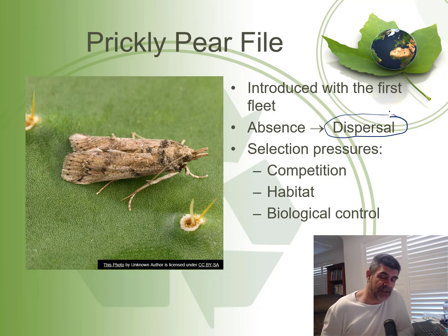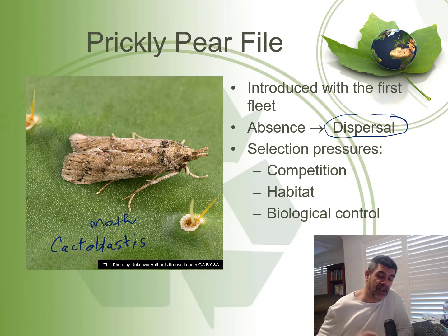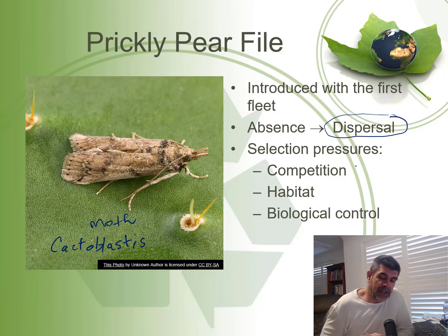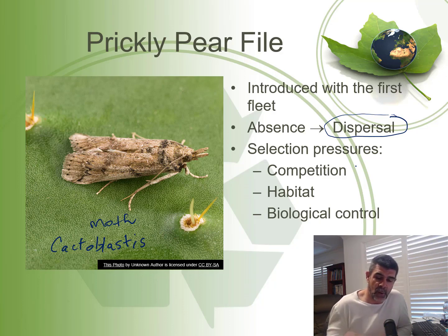Likewise, not just the species itself, but the solution was also brought into the country. This particular species of moth called Cactoblastis was brought in specifically because the grubs or caterpillars of this particular moth feed on the prickly pear. Just as we did with the cane toad, we need to look at some of the potential selection pressures that made this particular species an initial success, but also therefore led to a decrease in its abundance and distribution with the advent of a specific biological control agent.